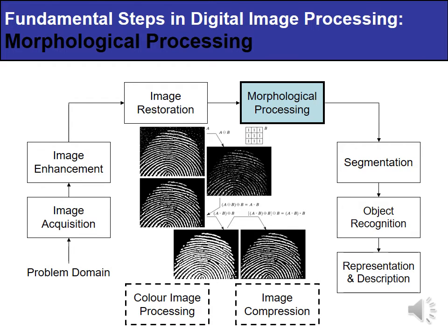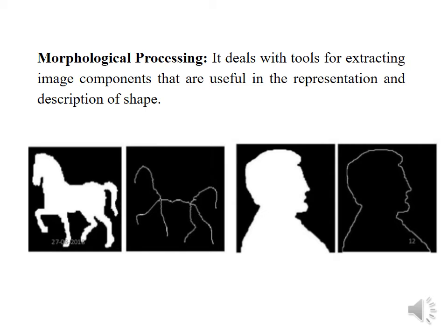Next is morphological image processing. It deals with tools for extracting image components that are useful in the representation and description of shape. The input will be an image, and at the output we get components or attributes representing boundaries or other pictorial presentations. For example, two input images — one of a horse and one of a person — after applying morphological processing, we get the boundary image.